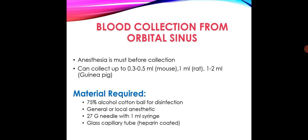Blood collection from the orbital sinus. Anesthesia is required before collection. You can collect up to 0.3 to 0.5 ml in case of mouse, 1 ml in case of rat, and 1 to 2 ml in case of guinea pig. Materials required are: 75 percent alcohol cotton ball for disinfection, general or local anesthetic, 27 gauge needle with 1 ml syringe, and glass capillary tubes that are heparin-coated.